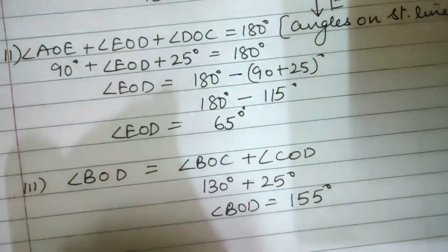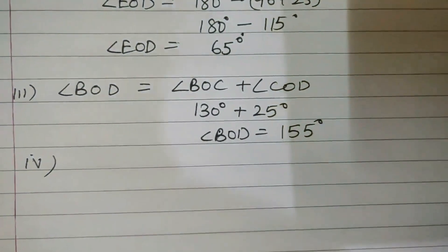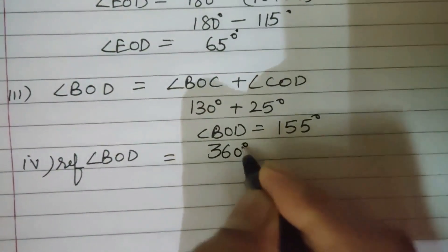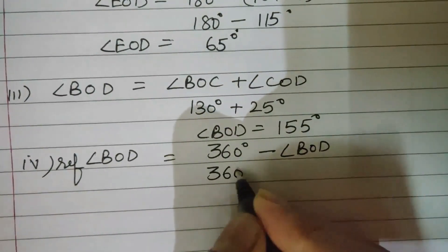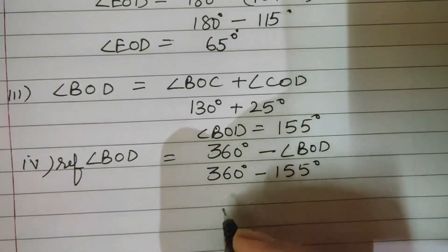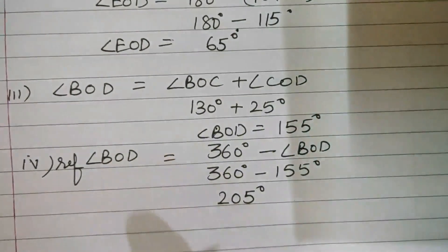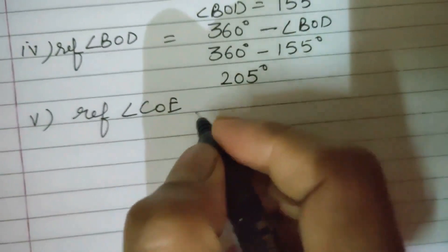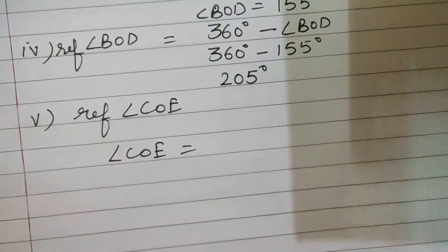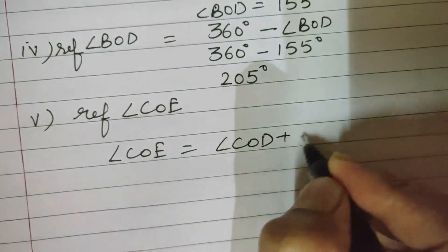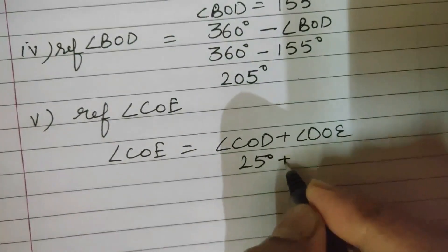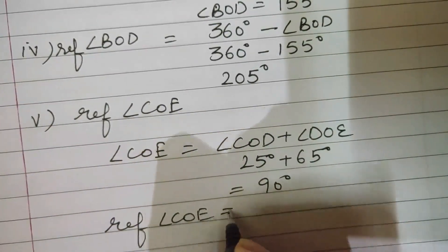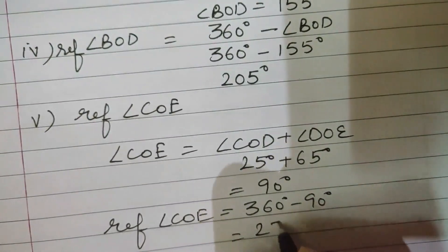Fourth part: reflex angle BOD equals 360 degrees minus angle BOD. So 360 minus 155 equals 205 degrees. Fifth part: find reflex angle COE. Angle COE equals angle COD plus angle DOE, which is 25 plus 65 equals 90 degrees. So reflex angle COE equals 360 minus 90 equals 270 degrees.